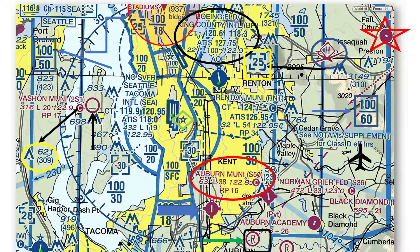If your airplane were positioned here flying at 4,000 feet, would you be in the Class B airspace? If you answered yes, you are correct. You would be flying in the Class B airspace and would need ATC clearance when flying in this area.